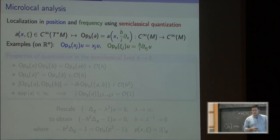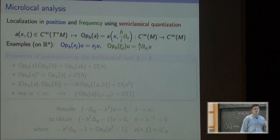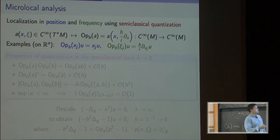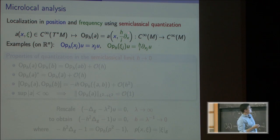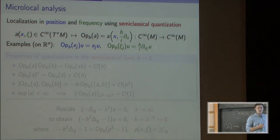To understand the proof, I need to formulate a stronger statement, which is in some sense a more natural statement to prove. The statement on the previous slide was about a lower bound on the L2 norm in a given open set, which you can think of as localizing the eigenfunction in position. Now we can actually localize more — in both position and frequency. This localization is part of the theory called microlocal analysis, and the way I'll achieve it is by quantizing classical observables.